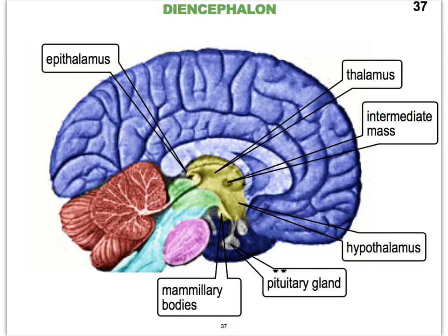It's pretty easy to locate the diencephalon because the biggest part is the egg-shaped thalamus. We see one hemisphere of our egg-shaped thalamus, and there's always this darker dot that is part of the thalamus — a little structure that forms a bridge between the two hemispheres called the intermediate mass, sometimes also referred to as the interthalamic adhesion.